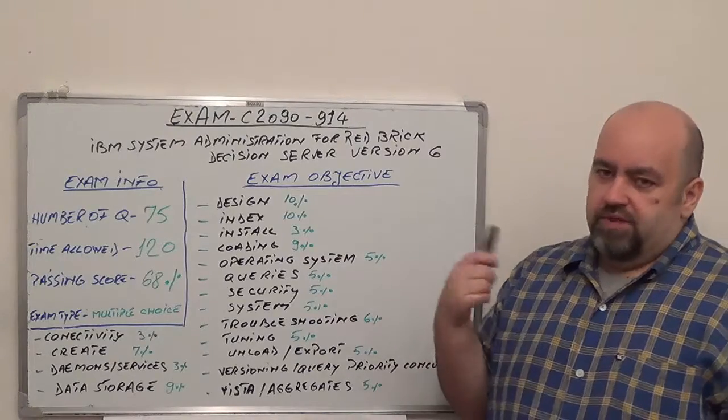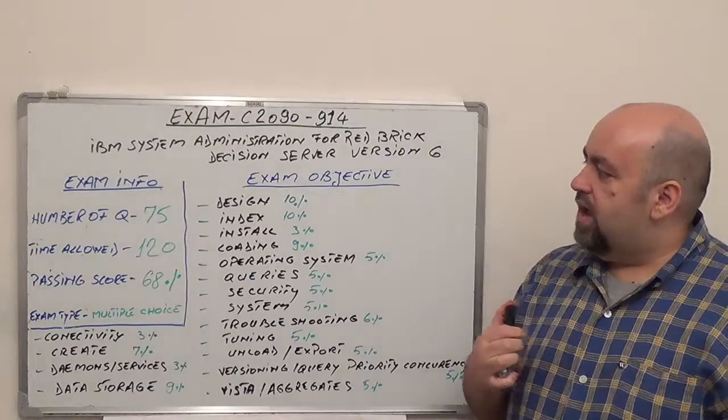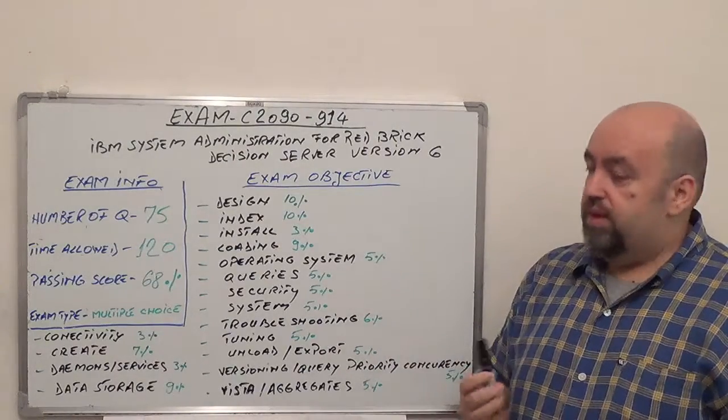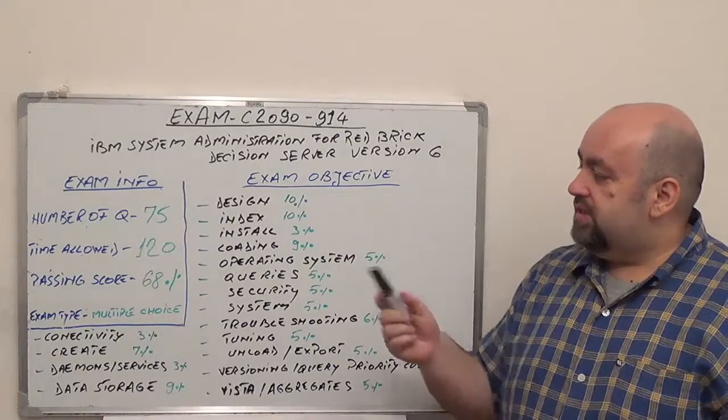which is IBM System Administration for Red Break Decision Server Revision 6. I'll give you some basic information about this exam. First, you're going to have 75 questions. The time allowed is going to be 120 minutes, and the passing score is 68% minimum.